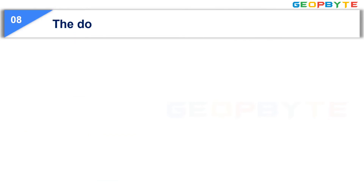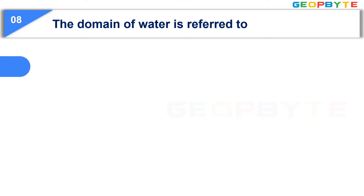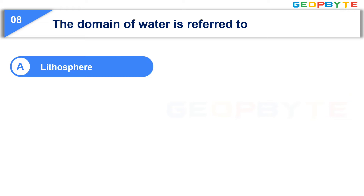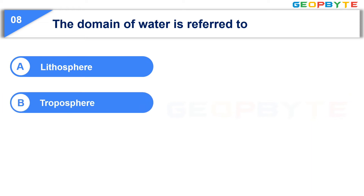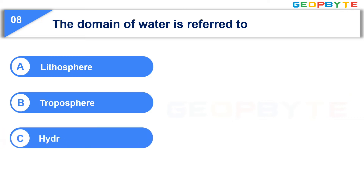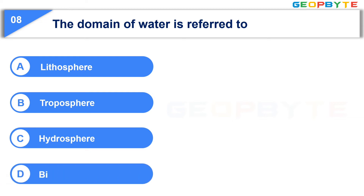The next question is: The domain of water is referred to. Option A: Lithosphere. Option B: Troposphere. Option C: Hydrosphere. Option D: Biosphere. Your time starts now.